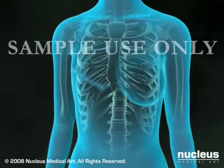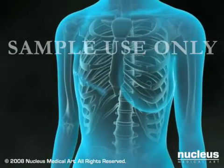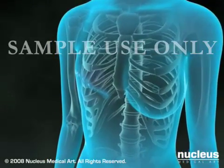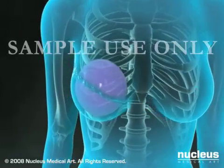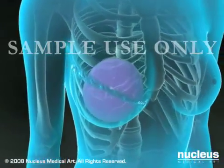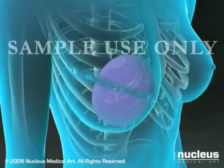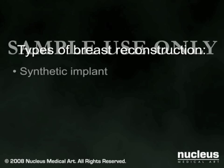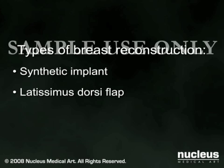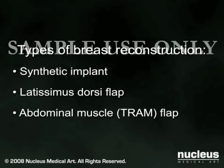Breast reconstruction helps restore the appearance of the breast after a mastectomy. It may be performed at the time of the mastectomy or sometime later. You and your surgeon will choose which type of reconstructive surgery is best for you. Your choices will generally include either a synthetic implant or one of two procedures using your own tissue: a latissimus dorsi muscle flap or an abdominal muscle flap, also called a TRAM flap.